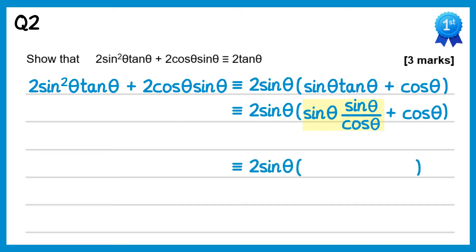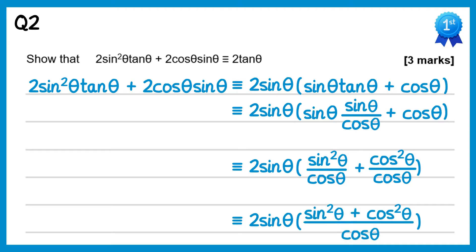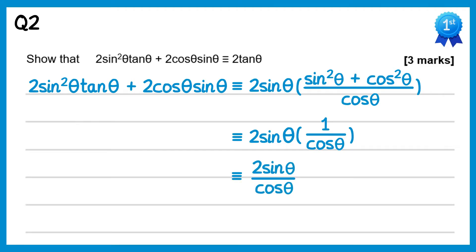We multiply sinθ by the fraction to get sin²θ over cosθ, plus cosθ. Next we write these as one single fraction — replacing cosθ with cos²θ over cosθ gives a common denominator of cosθ, so we get sin²θ plus cos²θ over cosθ. Using the identity sin²θ + cos²θ = 1, we end up with 2sinθ times 1 over cosθ, which is 2sinθ over cosθ, and since sinθ over cosθ is tanθ, we get 2tanθ, which is what we wanted.